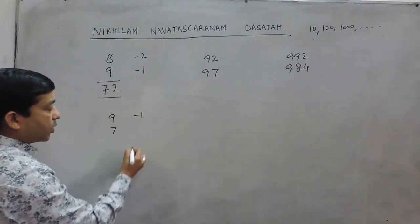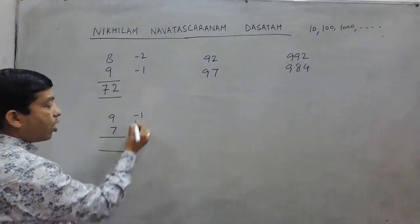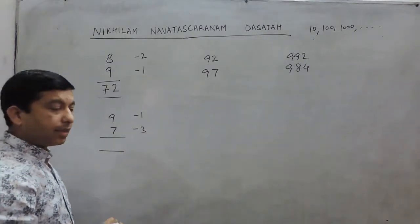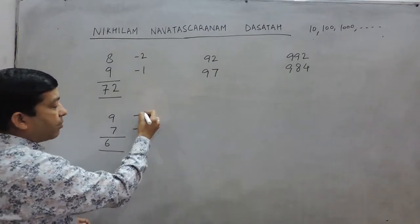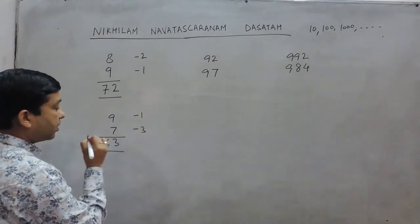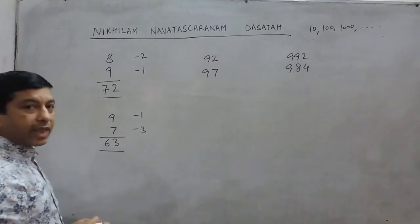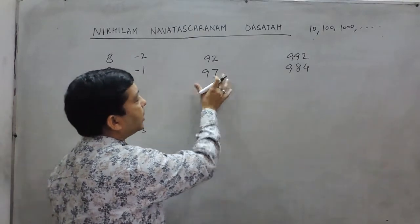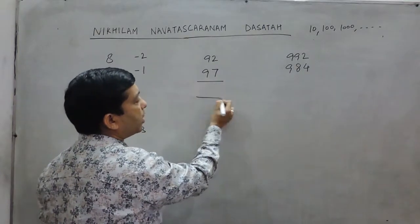If we take another example and multiply 9 and 7, here the difference from 10 is 1, and here it is 3. So if we subtract 4 from 10, it comes out to be 6. And when we multiply 1 and 3, it becomes 3. So the multiplication of 9 and 7 becomes 63.